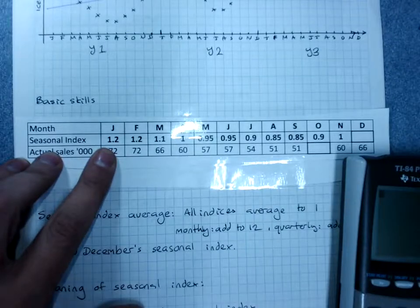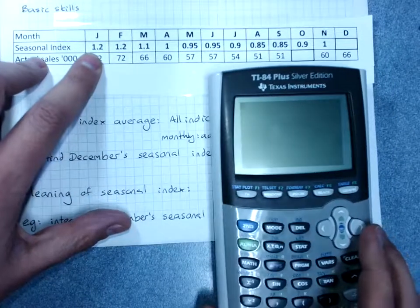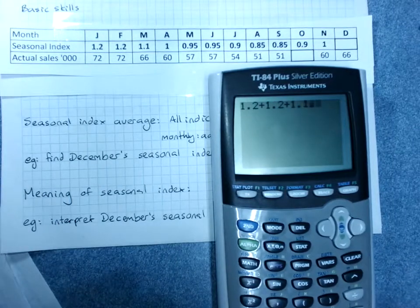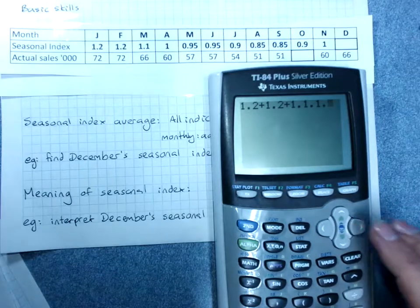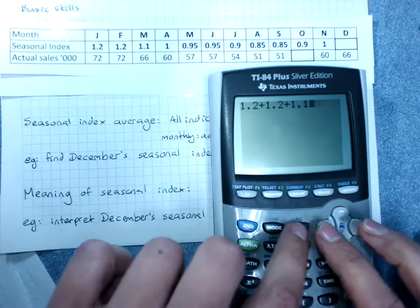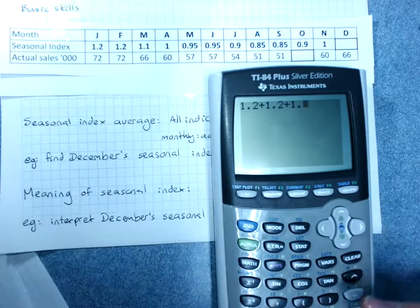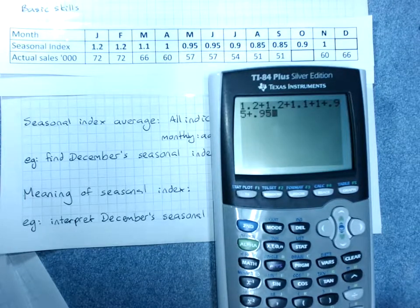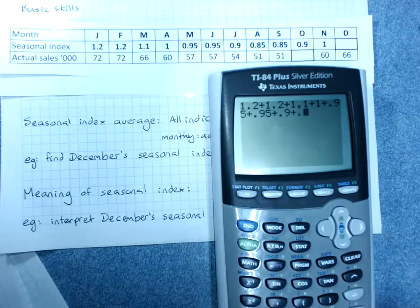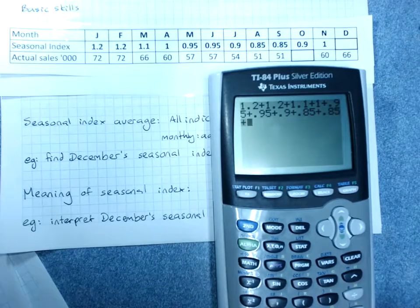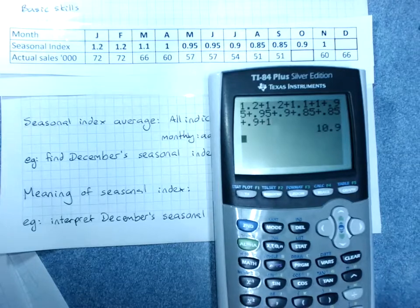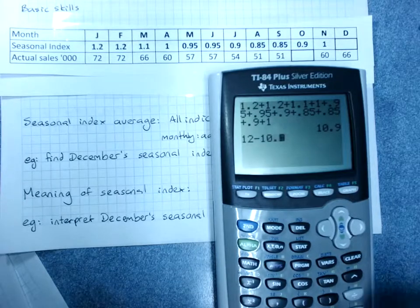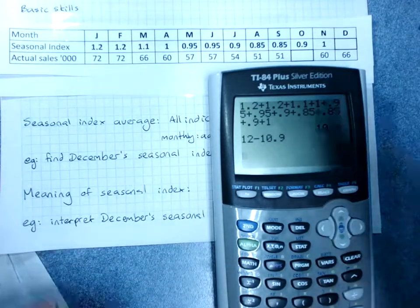And all we do is add up all of the seasonal indices. Whoops, something terrible happened there. What have I got? Plus 1.1 plus 1 plus 0.95.